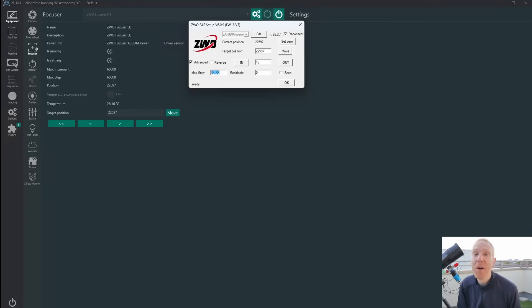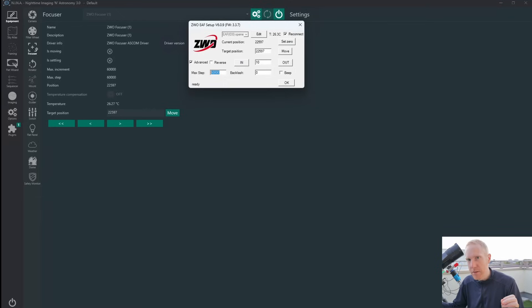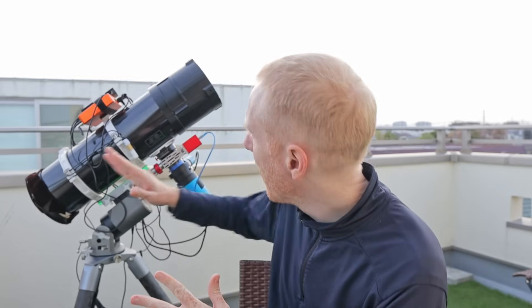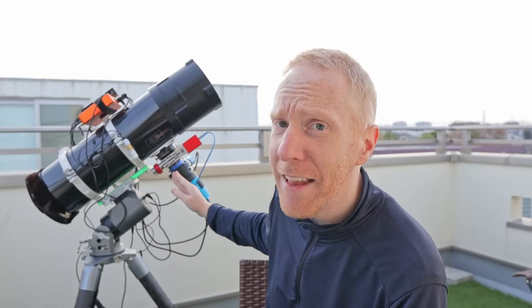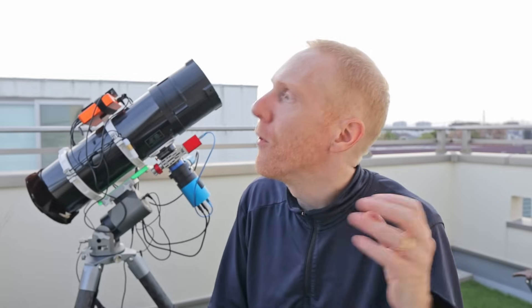This was the actual issue. The max step here was set to zero, and this is what the error message was saying. The max step should be between 1 and 60,000. Now, in theory, you should set the max step so that when you reach it, it is not at the end of your physical focuser travel. But I don't care, because the ZWO EF is only powered by USB, so it's not going to break any equipment if it reaches the max of the travel and can't go further. So I don't really care about that. And so for me, I set the max step to 60,000 steps.